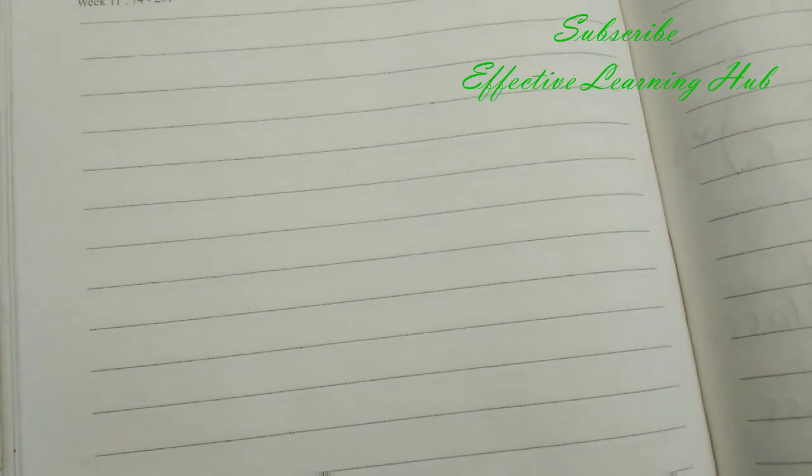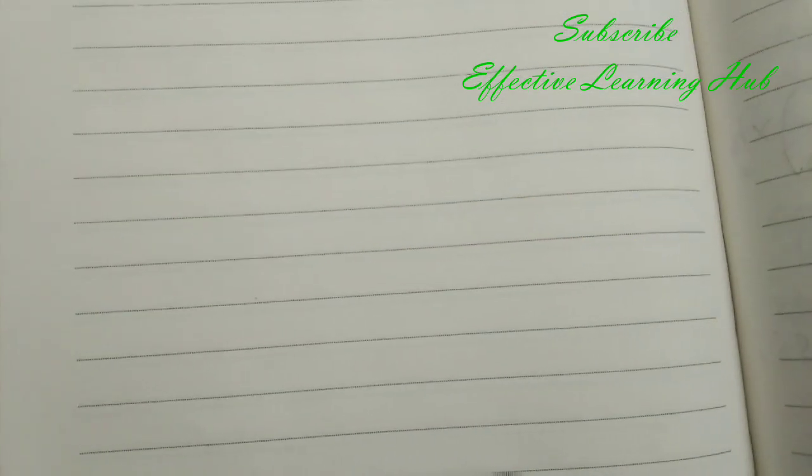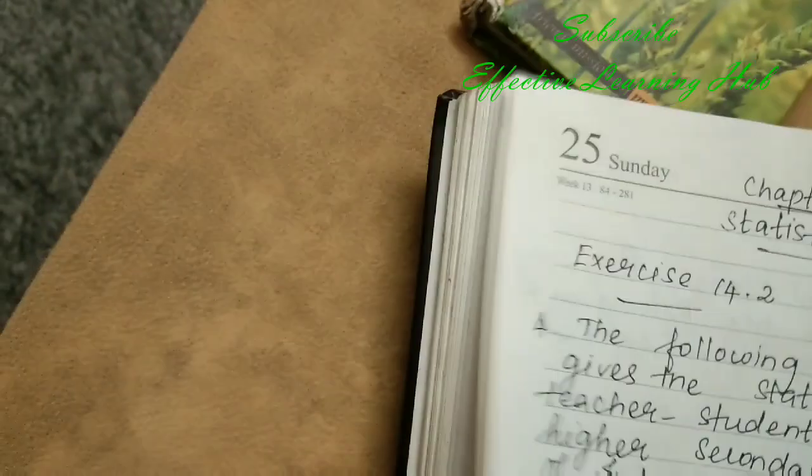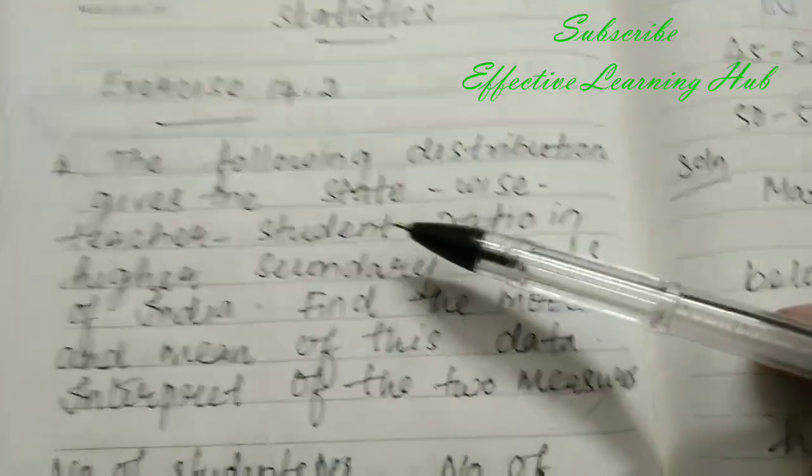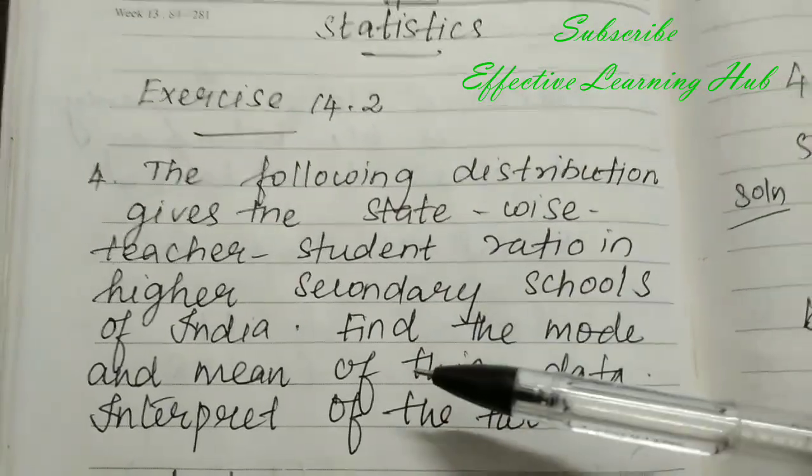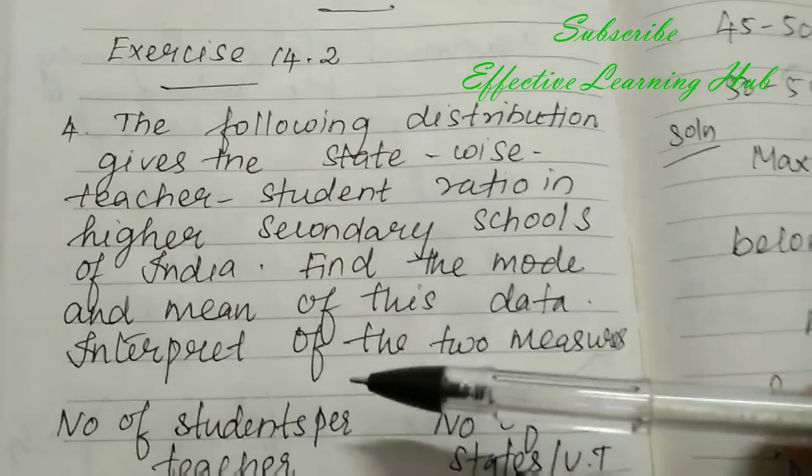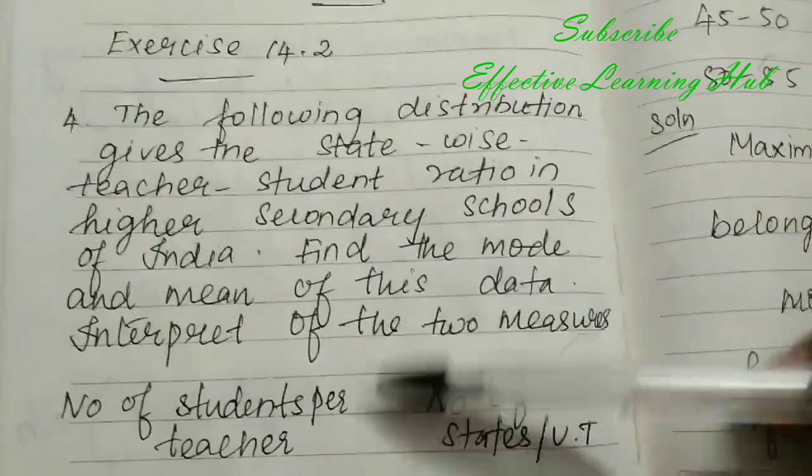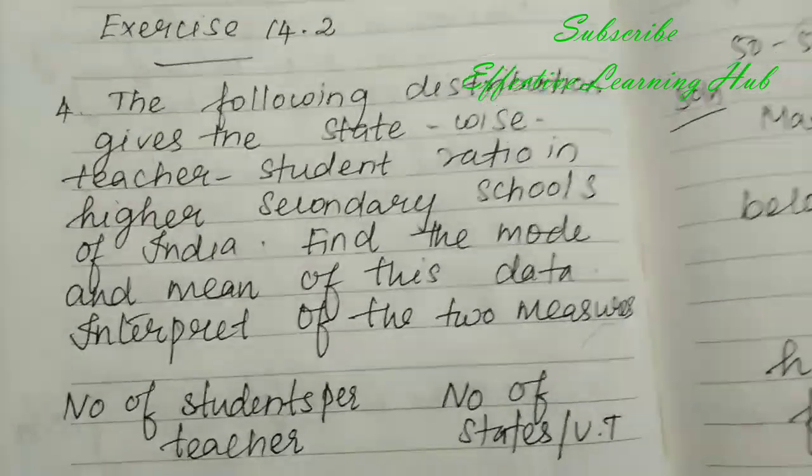Good morning students, today we are going to discuss Chapter 14 Statistics, Exercise 14.2. The following distribution gives the state-wise teacher-student ratio in high secondary schools of India. Find the mode and mean of this data intercept of the two measures.